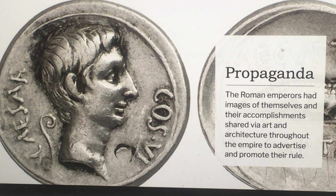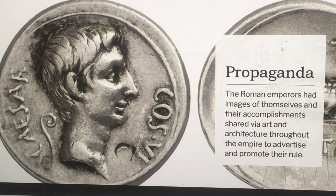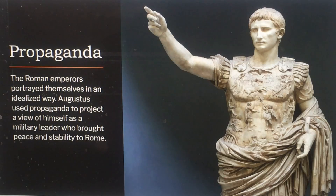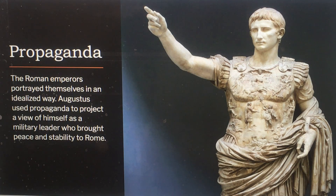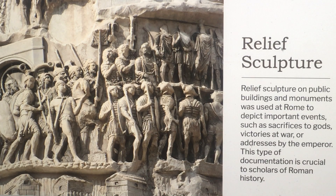Roman emperors had images of themselves and their accomplishments shared via art and architecture throughout the empire to advertise and promote their role — including on coins, which traveled everywhere. Roman emperors portrayed themselves in an idealized way; Augustus used propaganda to project a view of himself as a military leader who brought peace and stability to Rome. Relief sculpture on public buildings and monuments depicted important events such as sacrifices to gods, victories at war, or addresses by the emperor — documentation that is crucial to scholars of Roman history today.